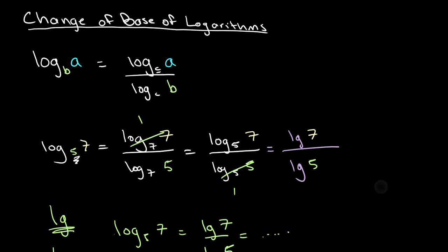One thing to note about remembering this law: the only way you can really get mixed up is if you confuse which term goes where. One way I like to think of it is in terms of natural selection. The A, or the larger number, stays on top because it is superior, and the B, the smaller more minuscule number, is inferior, so it goes on the bottom.